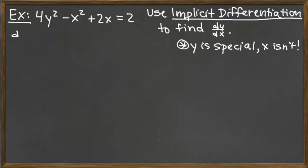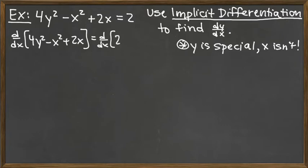We have d/dx of the left hand side here is 4y² - x² + 2x, and then we d/dx the right hand side. The derivative here of the left hand side, we see that the left hand side has three terms separated by addition and subtraction. So we can still use the sum and difference rules to be able to take the derivative term by term.